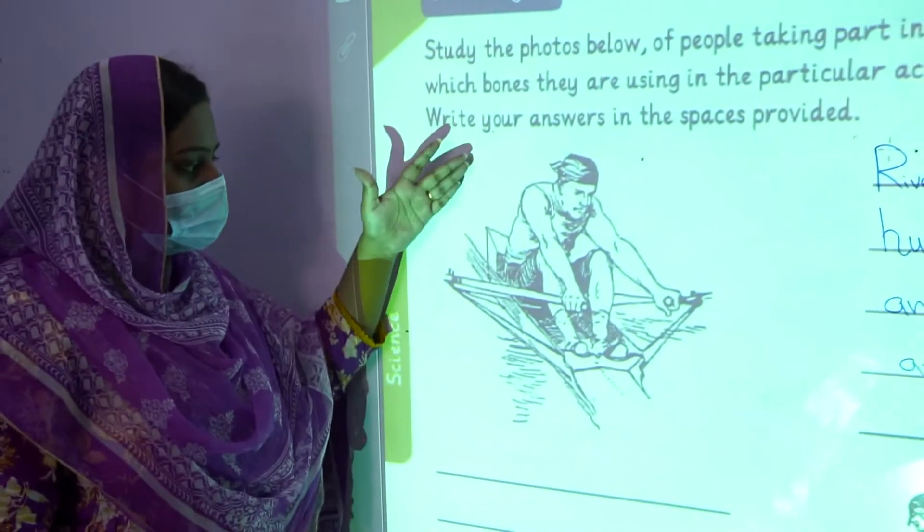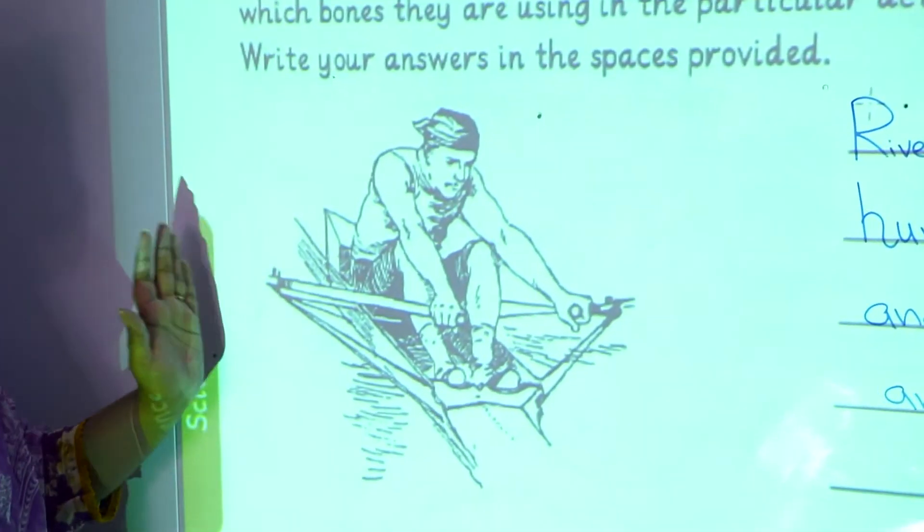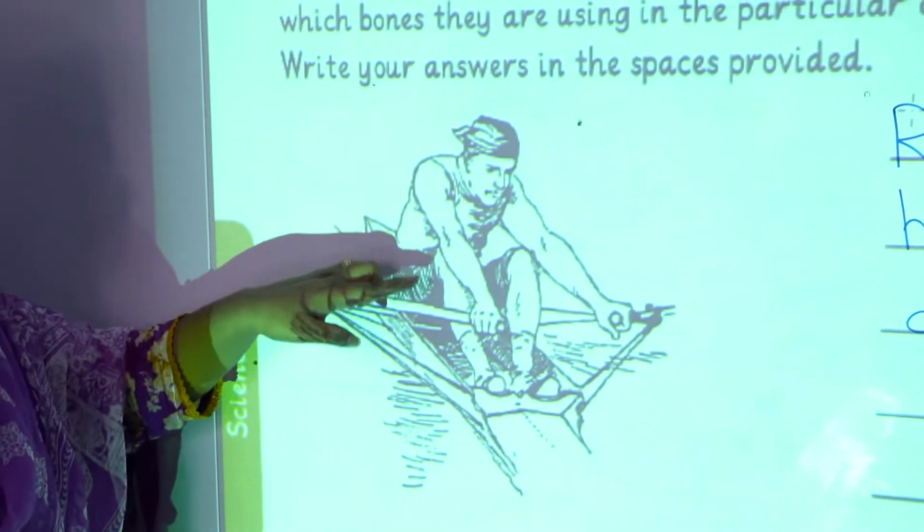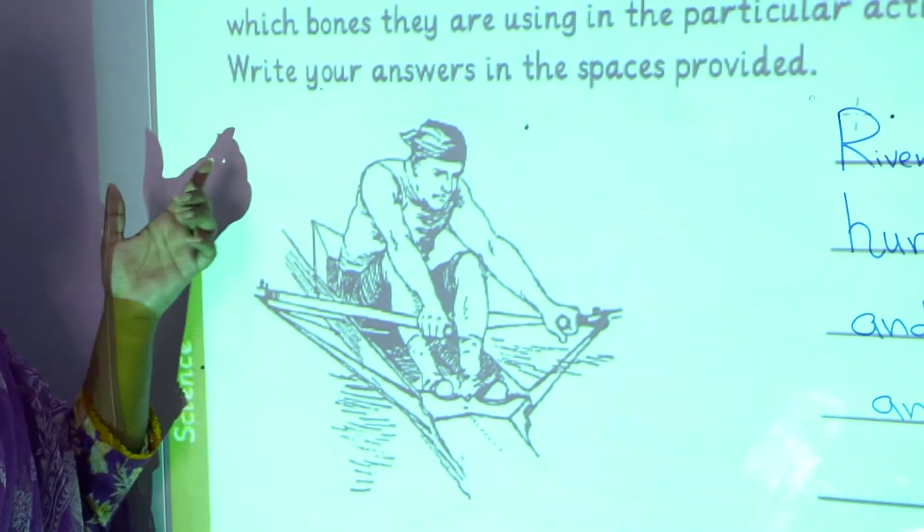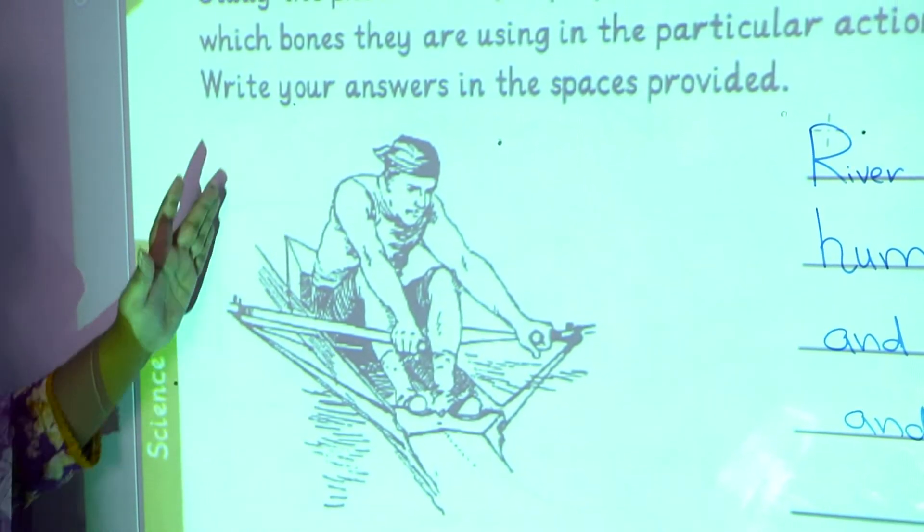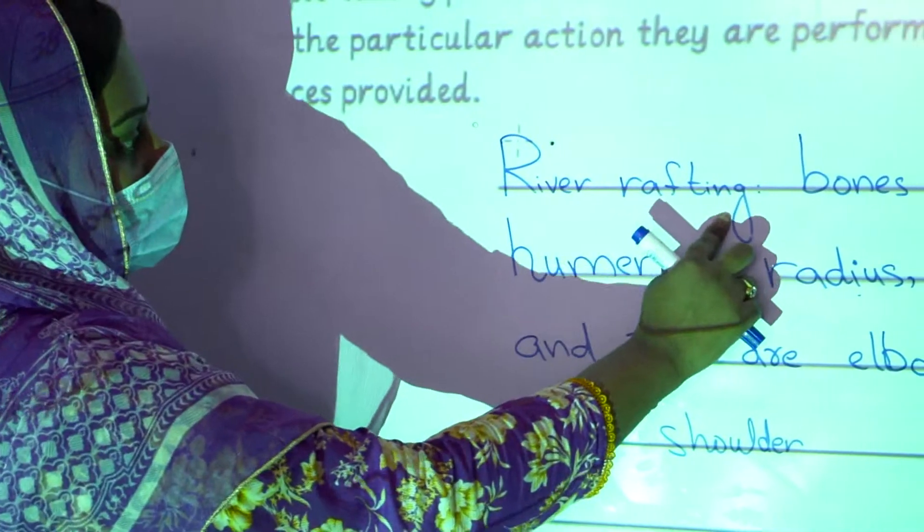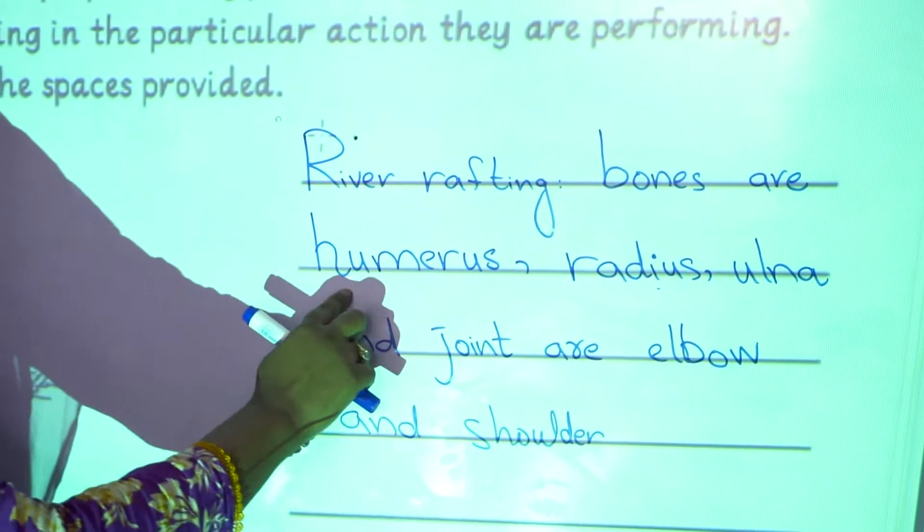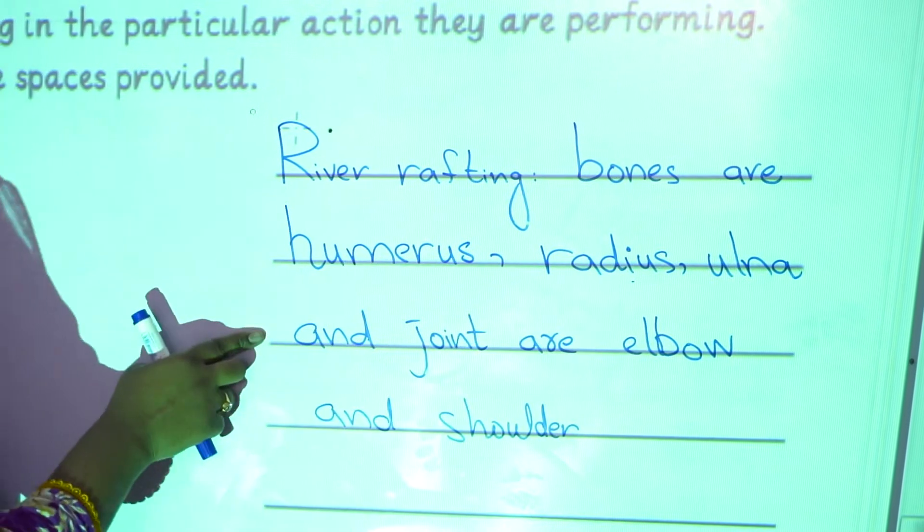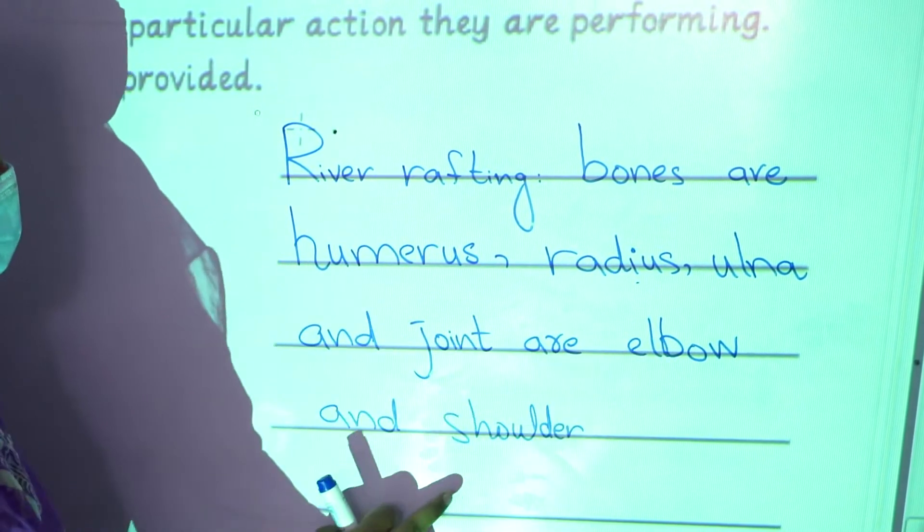First of all you have seen the first picture, there is a man who is playing a boat in the water. The sport that the person is doing is river rafting and the bones that are used are humerus, radius, ulna and joints are elbow and shoulder.